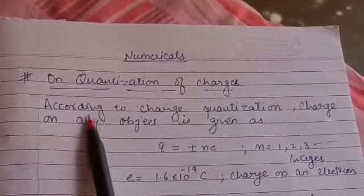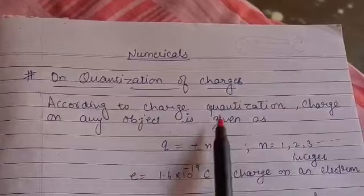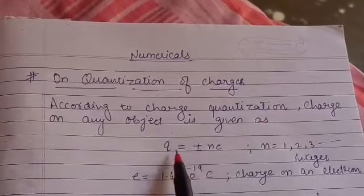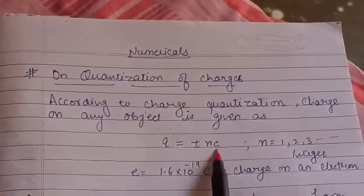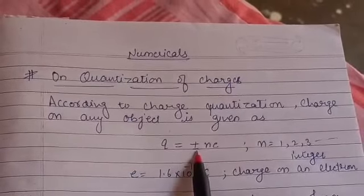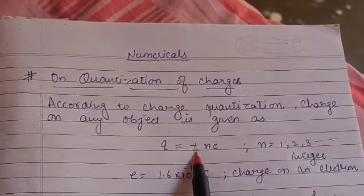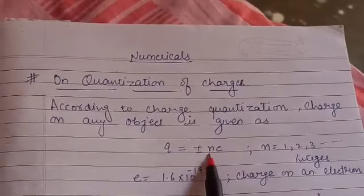As you know, according to charge quantization, charge on any object is given as Q is equal to plus minus N E. Here Q is charge on an object. Plus minus indicates the charge could be positive or it could be negative. N is an integer.